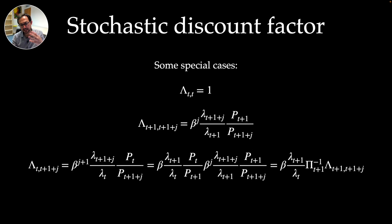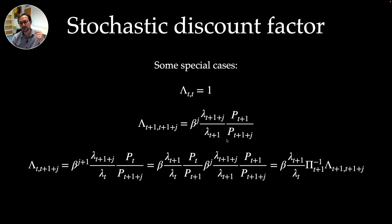Some special cases of the stochastic discount factor are useful when rewriting infinite sums recursively: the factor for T given T is 1; for T and T+j, iterating gives a standard expression; and we can also get an expression relating T to T+1+j using the previous results.